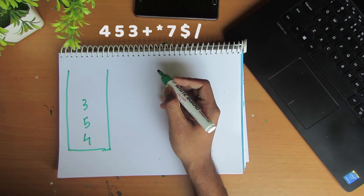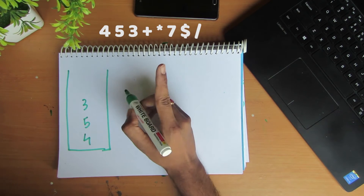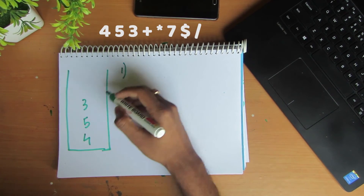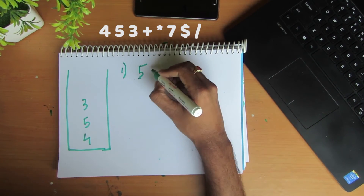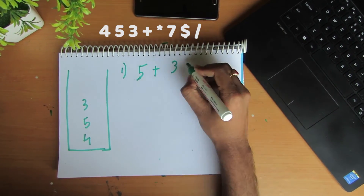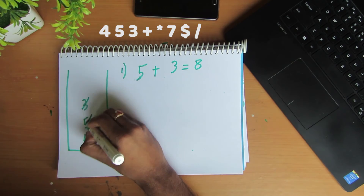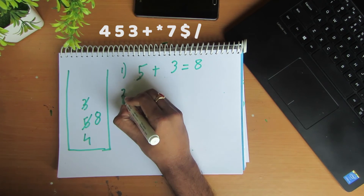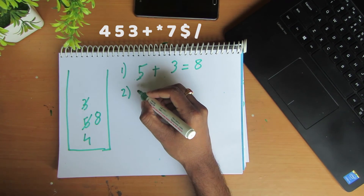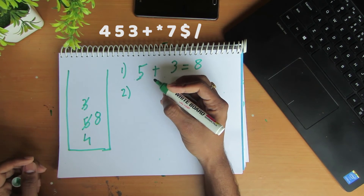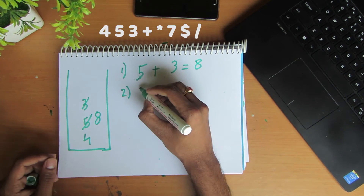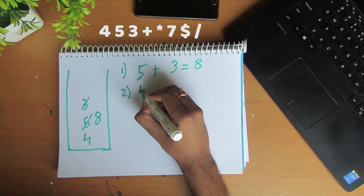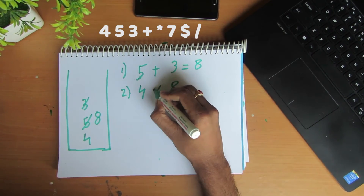Since plus is a binary operator, we pop two operands — 5 and 3 — add them together to get 8, and push 8 back onto the stack. Next is multiplication, also a binary operator, so we pop 4 and 8, multiply them to get 24, and push 24 onto the stack.